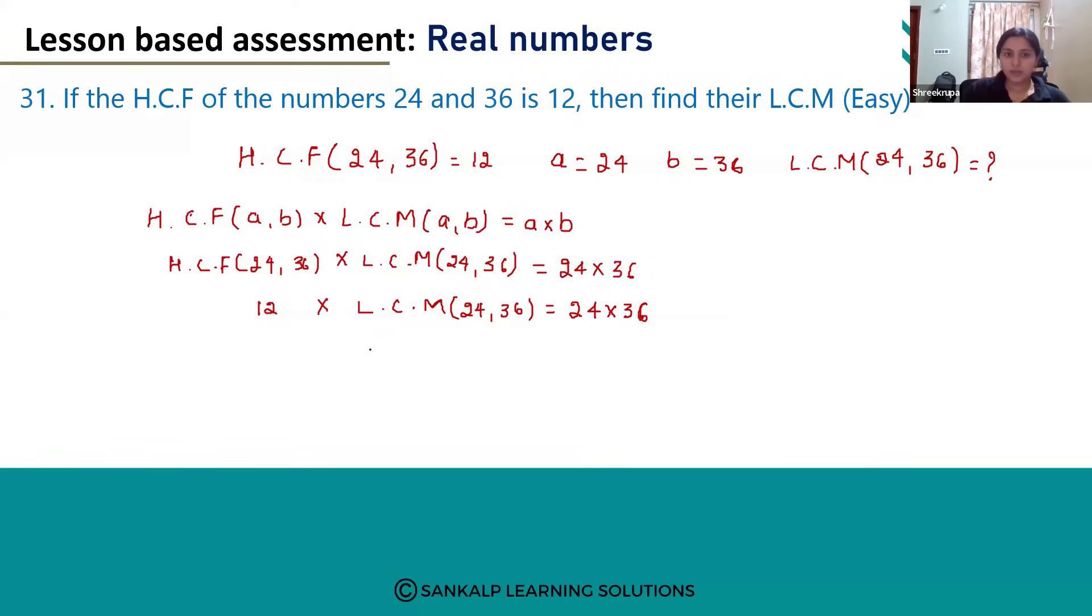So if we shift the number to the other side of the equal sign, we will get 24 into 36 divided by 12. 12 ones are 12, so 36 into 2. 2 sixes are 12 and 2 threes are 6, giving 72. So the LCM of 24 and 36 will be 72.